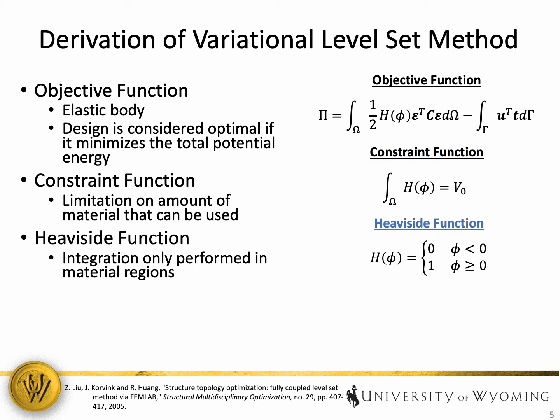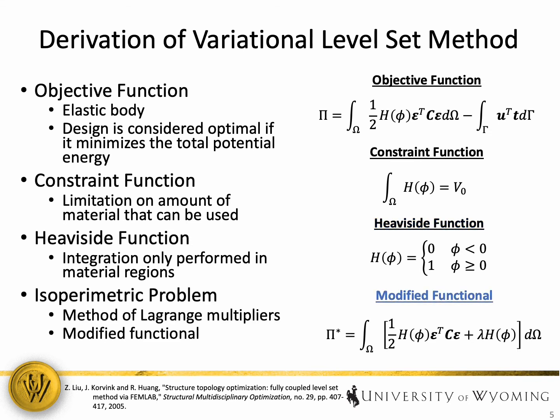Now within both the objective function and the constraint function, you'll notice that there is this Heaviside function, and the purpose of this is simply to ensure that the integration is only performed in the material regions. So what this ultimately leads to is an isoperimetric optimization problem, and to solve this, we can implement the method of Lagrange multipliers and generate a modified functional. Within the modified functional, it simply has the objective function plus the Lagrange multiplier times our constraint function.